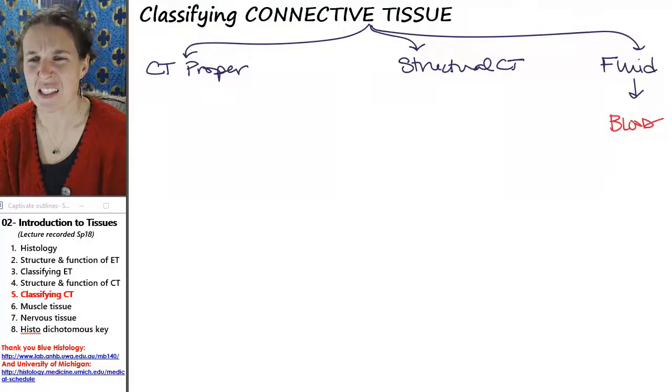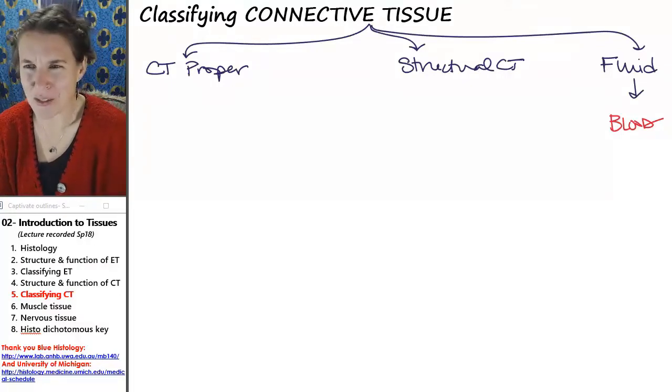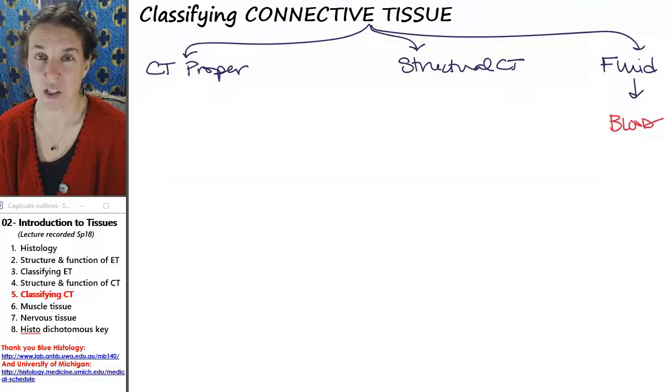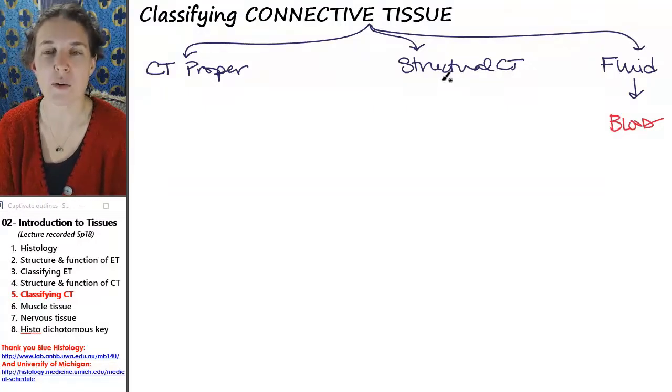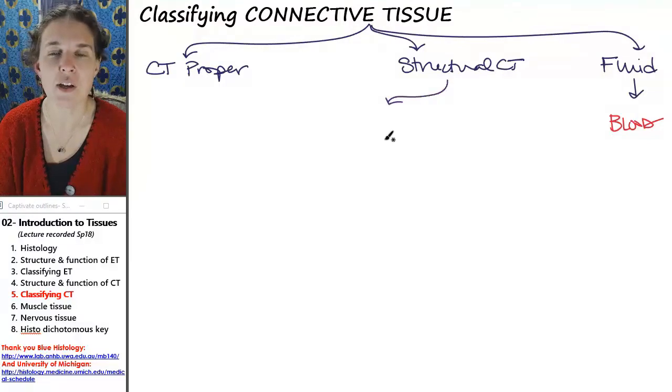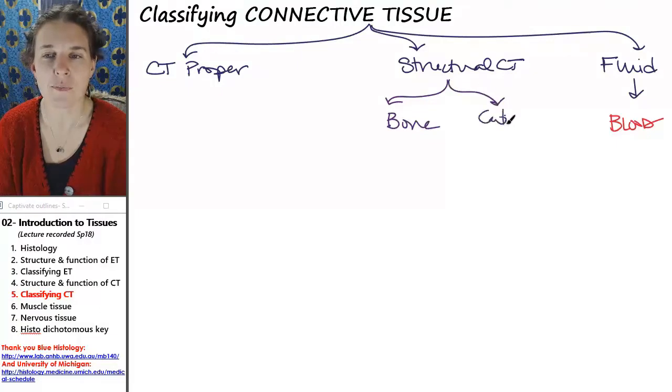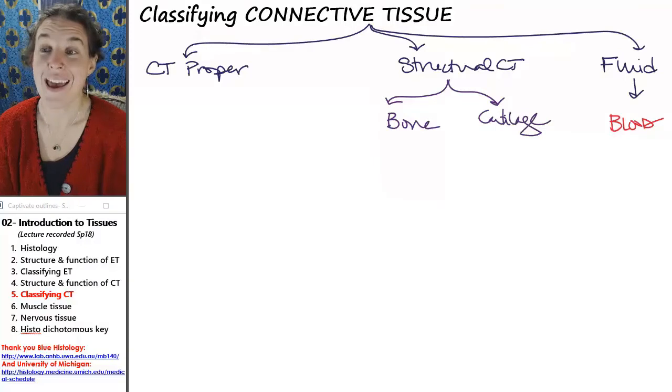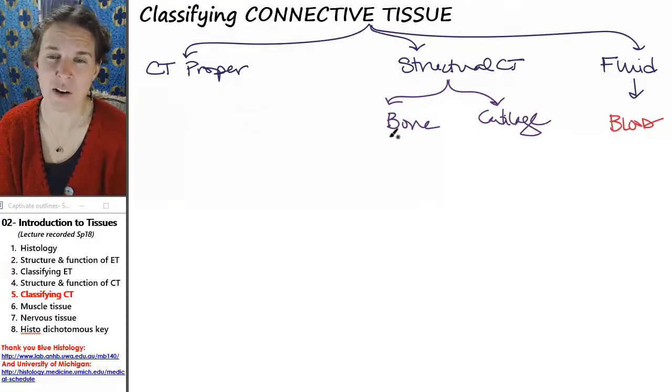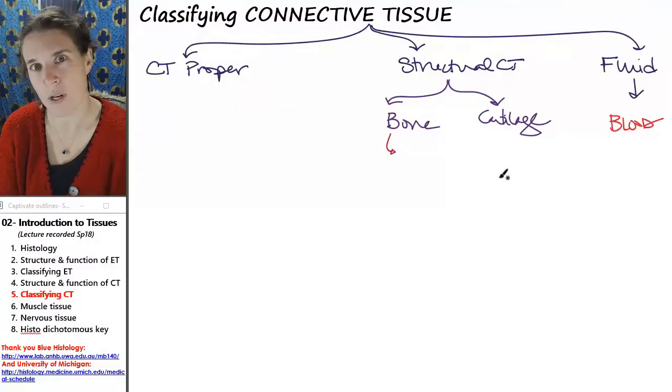That's cool. Let's do structural connective tissue next because bone and cartilage actually are logically really similar to each other. So our two kinds of structural connective tissue are bone and cartilage. There are actually two bones and three cartilages.